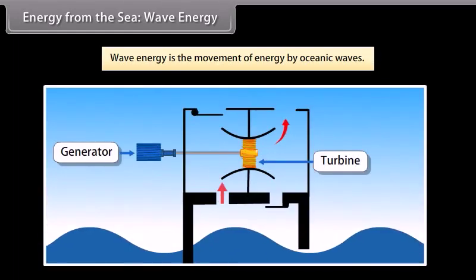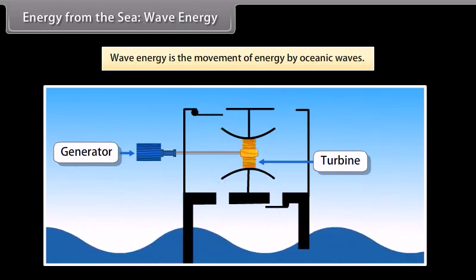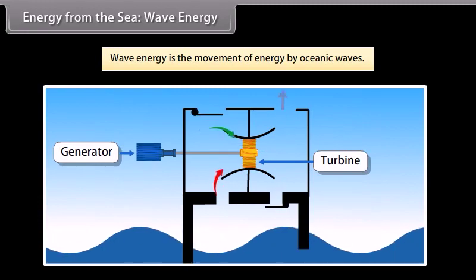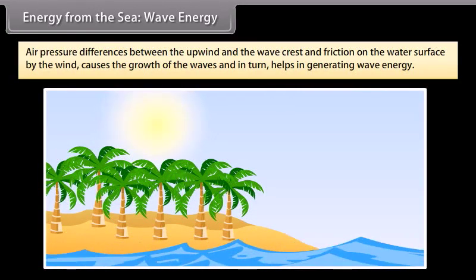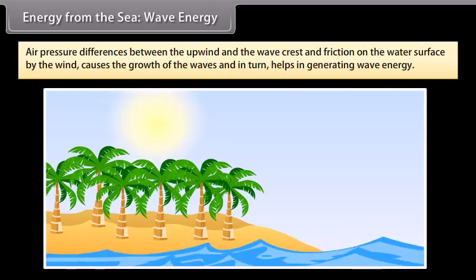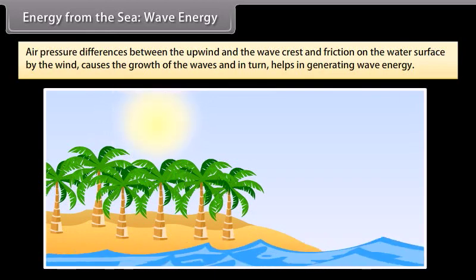Energy from the sea: Wave energy. Wave energy is the generation of energy by oceanic waves. We can capture this energy to do useful work, for example, electricity generation, water desalination, or the pumping of water into reservoirs. Waves are generated by wind passing over the surface of the ocean. As long as the waves move slower than the wind speed above them, there is an energy transfer from the wind to the waves. Both air pressure differences between the upwind and the wave crest, as well as friction on the water surface by the wind, cause the water to undergo shear stress, leading to the growth of the waves and helping generate wave energy.